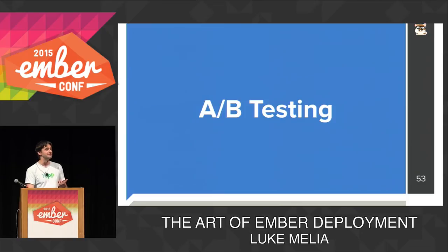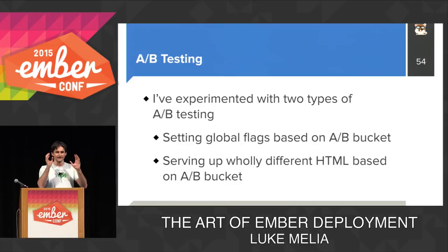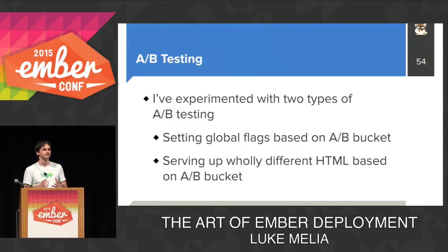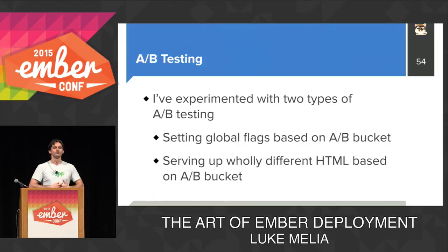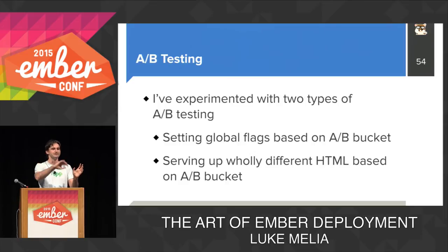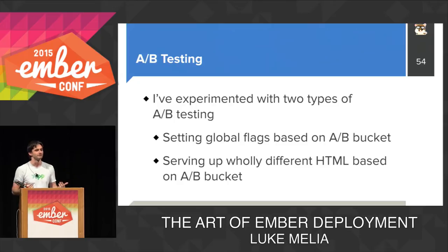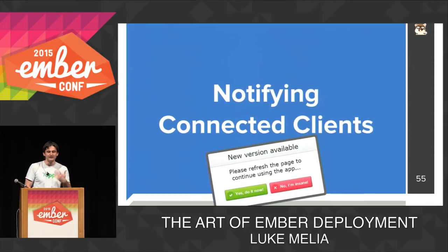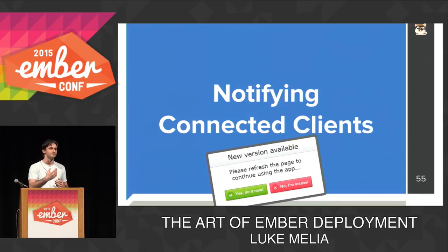Closely related is the ability to easily do A/B testing. There's the feature flag style where you bucket users into A or B and turn a feature on or off. The other style we used when we did a full redesign of our Ember app: we deployed into two different Redis buckets, bucketed users using our A/B framework, and served one HTML version to one group and one to the other. By the time we fully cut over, we felt really confident our redesign was an improvement. Finally — and I don't love this as a UI — you can use the fact that your server is notified of a new deployment to push a message via WebSockets down to the browser saying: hey, there's a new version available, you should refresh.